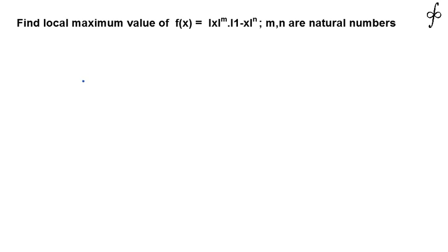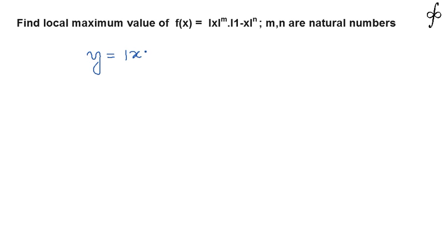Let's discuss the problem of finding the local maximum value of f(x) = |x|^m · |1-x|^n, where m and n are natural numbers. So our function is y = |x|^m · |1-x|^n.